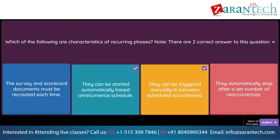Question. Which options does SAP Ariba Supplier Lifecycle and Performance support for processing supplier registrations? Note, there are three correct answers. Option 1: Internal users manually invite a supplier contact to register after the supplier request is approved. Option 2: Internal users complete the registration on behalf of a supplier. Option 3: Internal users merge a new supplier request with an existing registered supplier. Option 4: Category managers include the registration form for suppliers to complete as part of a sourcing event. Option 5: Administrators send mass invitations to groups of suppliers.